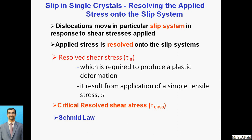The dislocation moves in a particular slip system in response to shear stresses applied. When dislocation occurs, on that particular region shear stresses are applied. We will cover how those shear stresses are resolved into the slip system. The resolved shear stress is denoted by tau r, which is required to produce plastic deformation. We have already covered what is plastic deformation and elastic deformation in the last lecture.